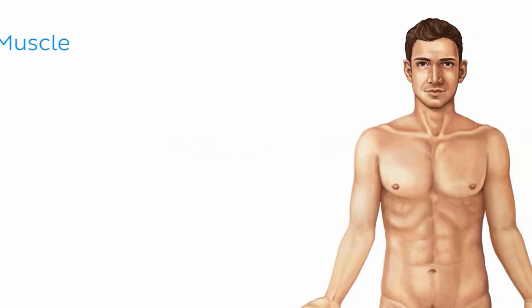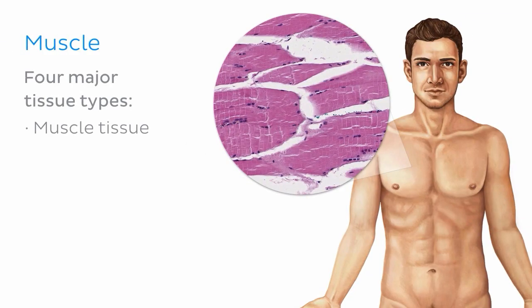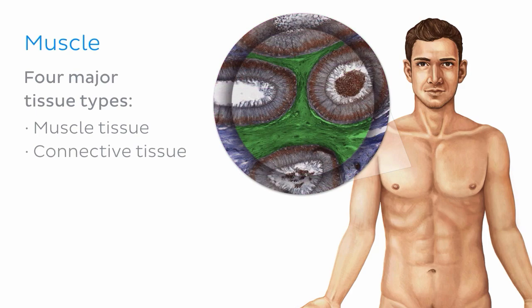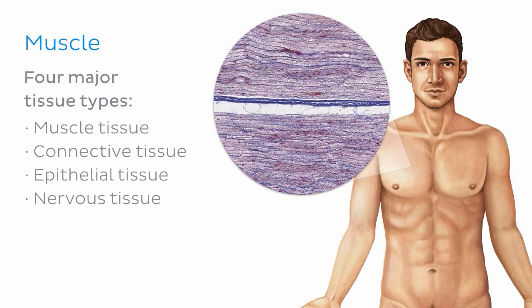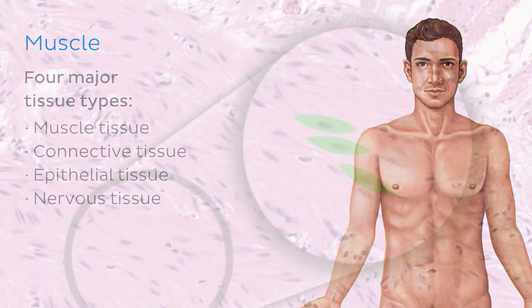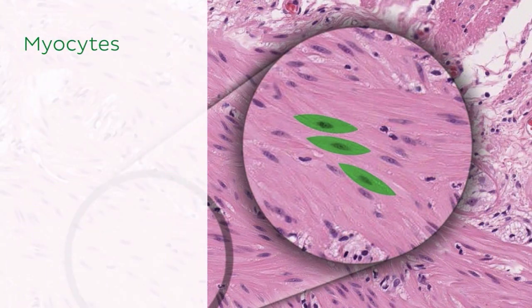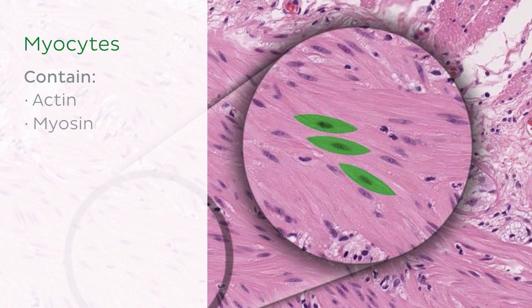As you may already know, muscle is one of the four major tissue types found in the human body, the other three being connective tissue, epithelial tissue, and nervous tissue. All muscle tissue is comprised of specialized cells known as myocytes, like the one seen here highlighted in green in this micrograph. These are the elongated cells that contain the contractile proteins actin and myosin in their cytoplasm. The cells are arranged in distinct bundles and can easily be distinguished from surrounding tissue.